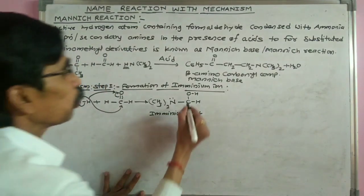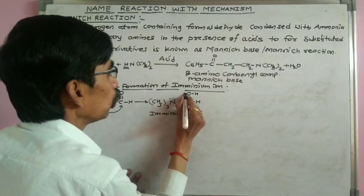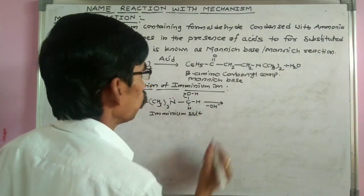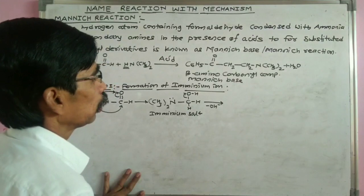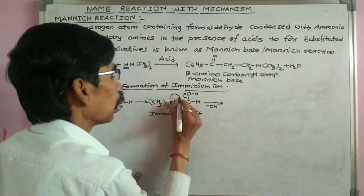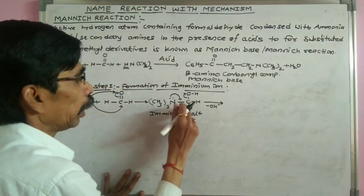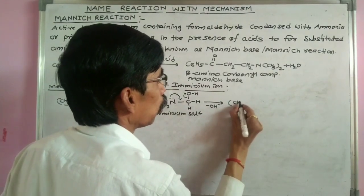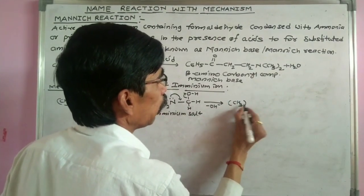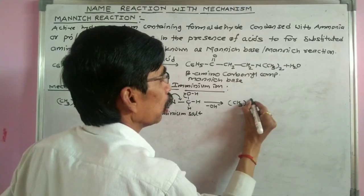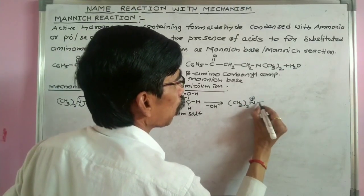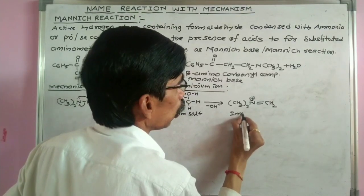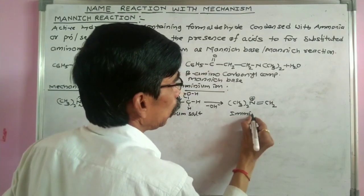Now this iminium salt loses this OH⁻ ion, and this bond is transferred in between this nitrogen and carbon atom. Nitrogen atom carries positive charge, and therefore it is called the iminium ion.